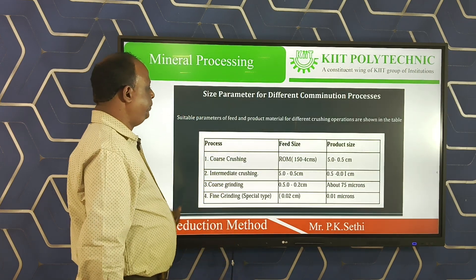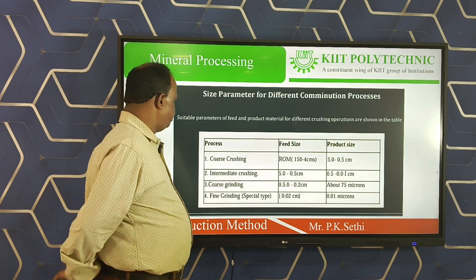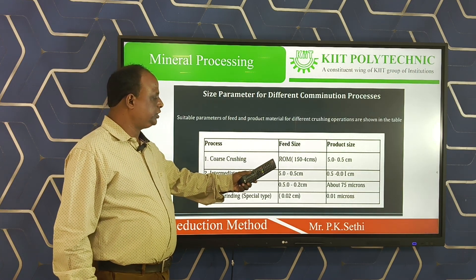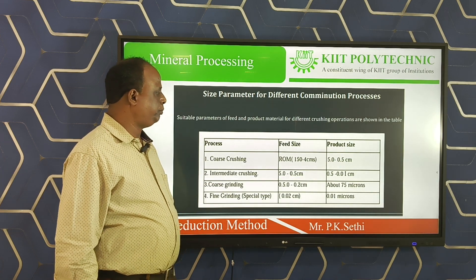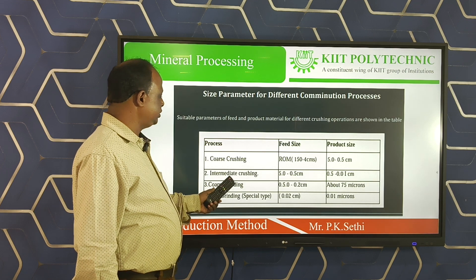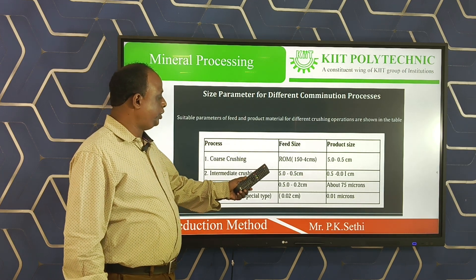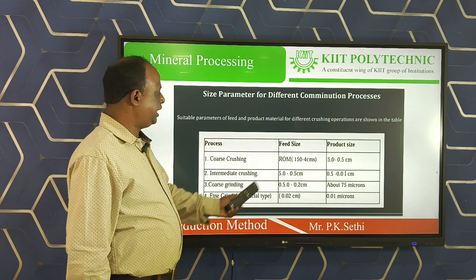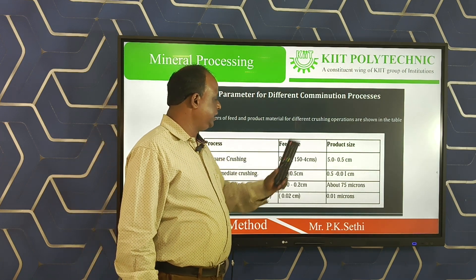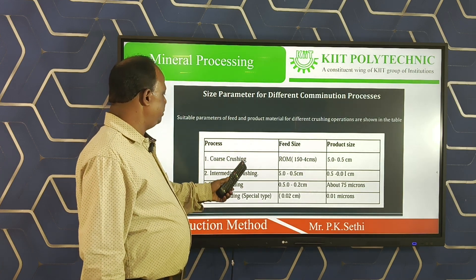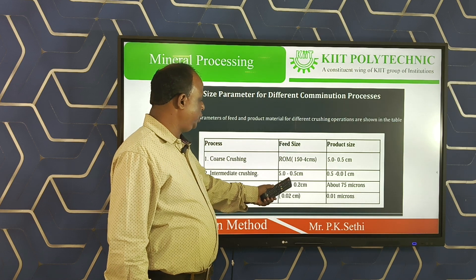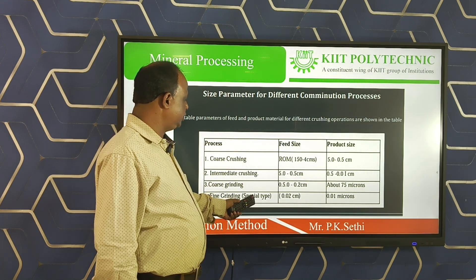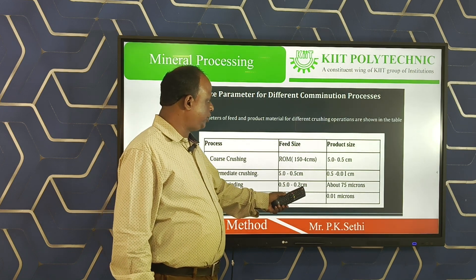Now, what are the feed sizes and product sizes obtained by these four different operations? For coarse crushing, the feed size is 1.50 to 4 centimeters and the product size is 0.5 to 0.4 centimeters. For intermediate crushing, the feed size is 5 to 0.5 cm and the product size is 0.5 to 0.01 centimeters. For coarse grinding, the feed size is 0.5 to 0.2 cm and the product size is about 0.75 microns.